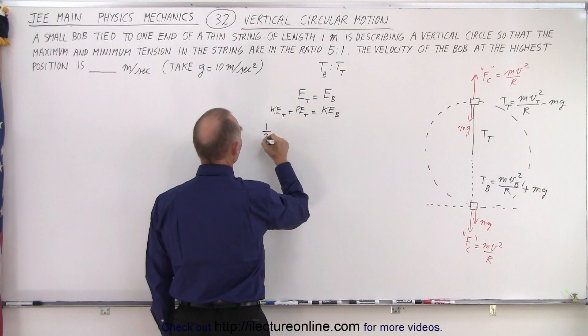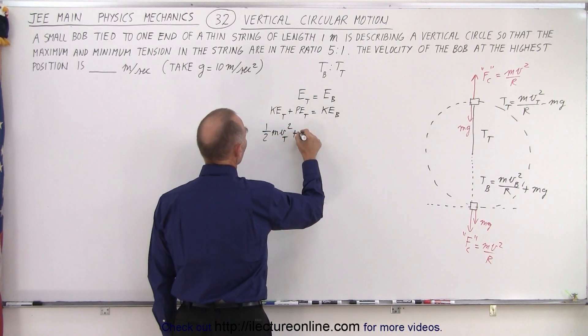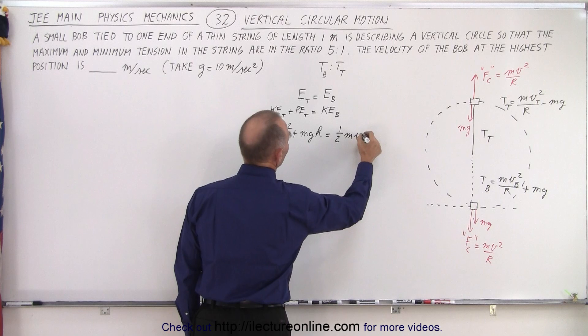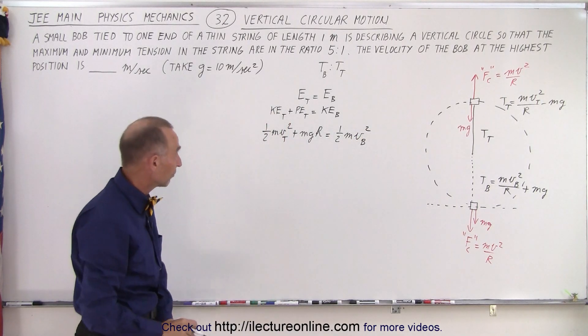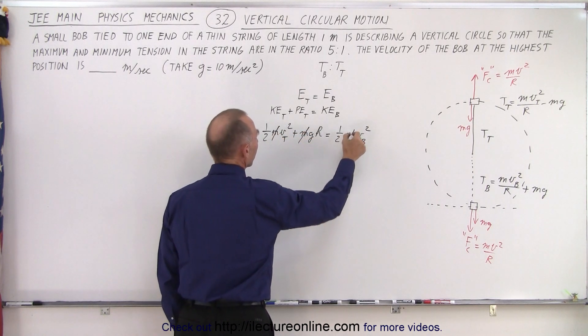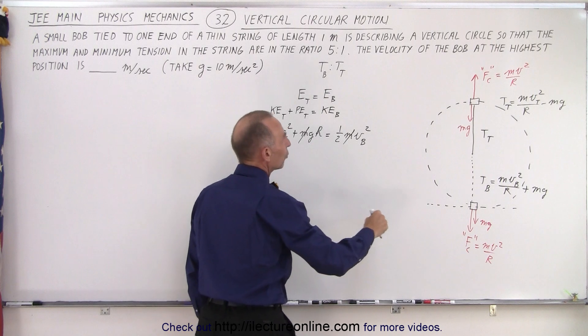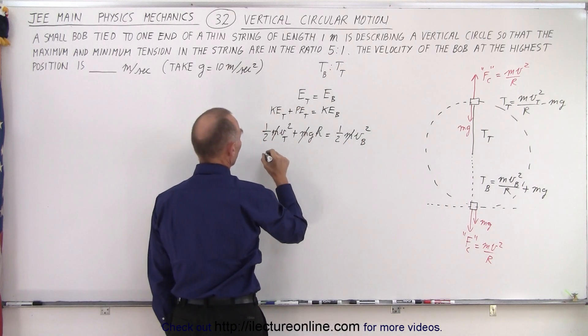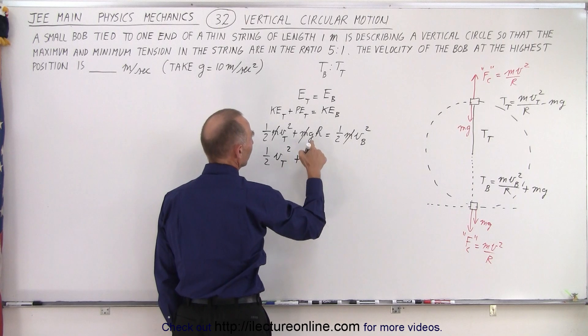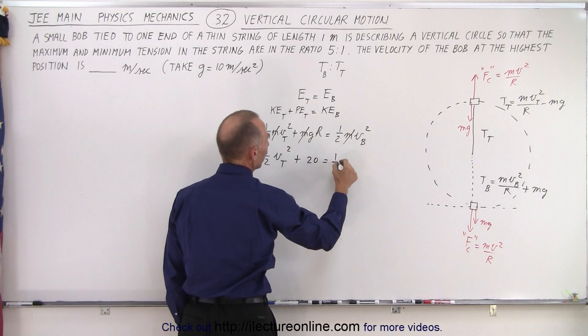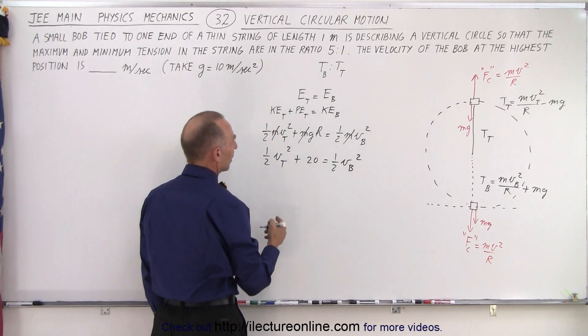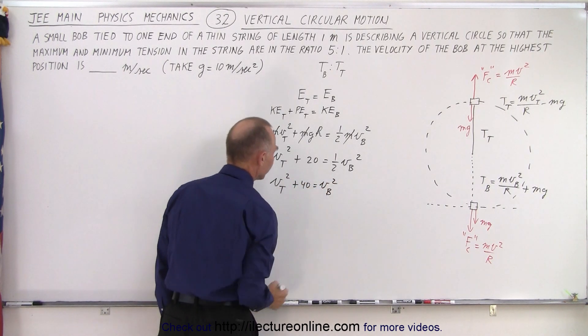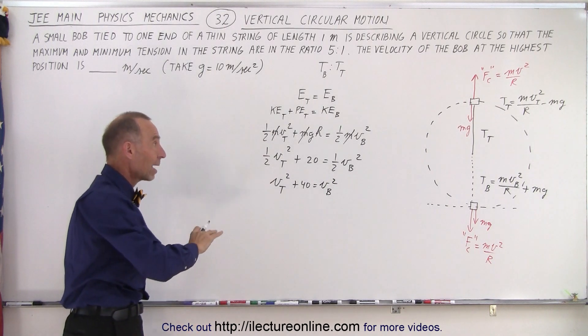So that means that one half mv at the top squared plus mgh is equal to one half mv at the bottom squared. So now let's simplify that equation a little bit. First of all we have an m everywhere that cancels out. g is 10, h would be twice the radius, so h would be twice the radius and the radius is 1, so that would be 2. So we end up with one half v top squared plus 10 times 2 which is 20 equals one half v bottom squared. And then we multiply everything by 2 to get rid of those halves, so we have v top squared plus 40 equals v bottom squared. Alright, so now we have a relationship between v at the top and v at the bottom.